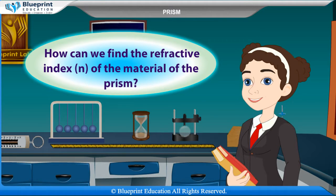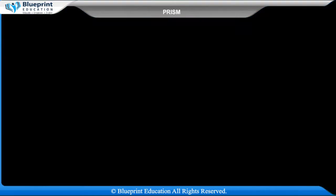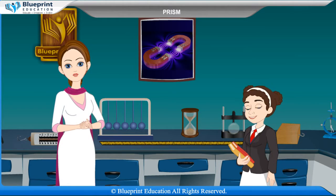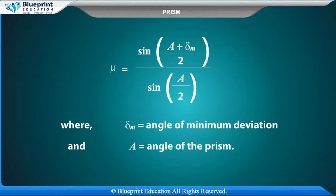Madam, how can we find the refractive index n of the material of the prism? The refractive index n of the material of the prism is given by mu equals sine of a plus delta m by 2, divided by sine a by 2, where delta m equals angle of minimum deviation and a equals angle of the prism.